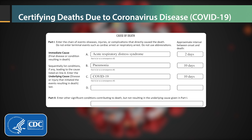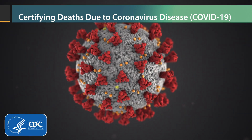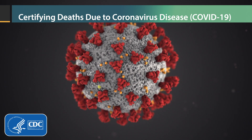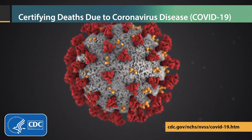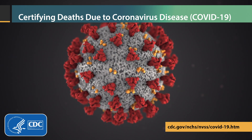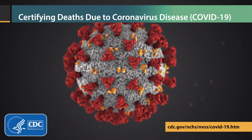Remember, if COVID-19 is determined to be a cause of death, it should be reported on the death certificate. Report an underlying cause that is specific, along with a logical sequence of conditions to which it gave rise in Part 1, and comorbidities in Part 2. By reporting a specific underlying cause with a logical sequence, you will be doing your part in ensuring the quality of cause of death information, which is needed to understand and fight this pandemic.